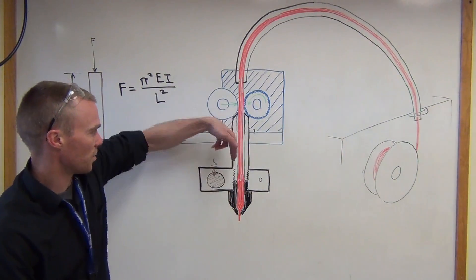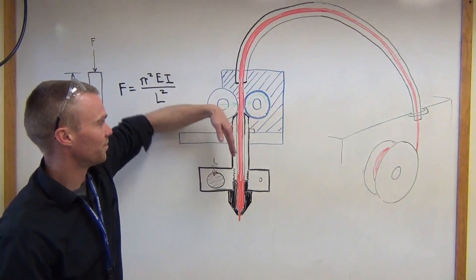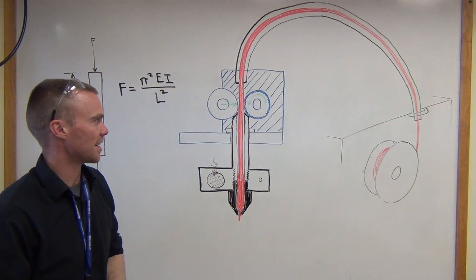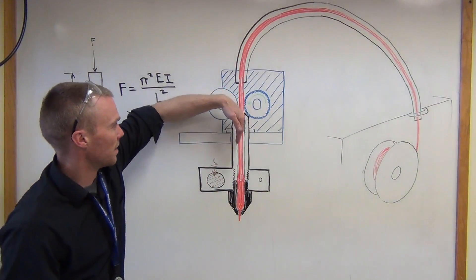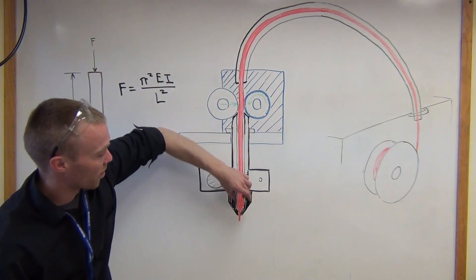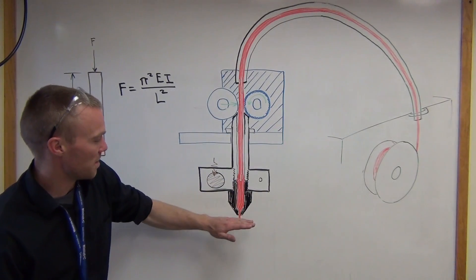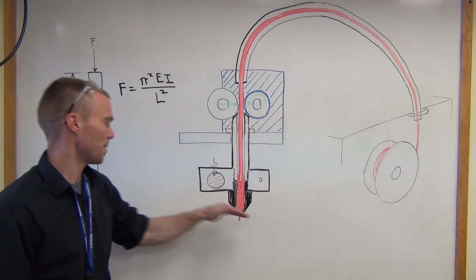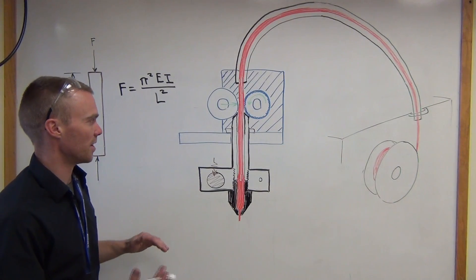That's a setting in your code - pretty much all software has that capability now. You'll pull the filament back in order to create negative pressure, and that allows the printed filament to freeze off. You get a good stop and then you'll start up at another point in your print.